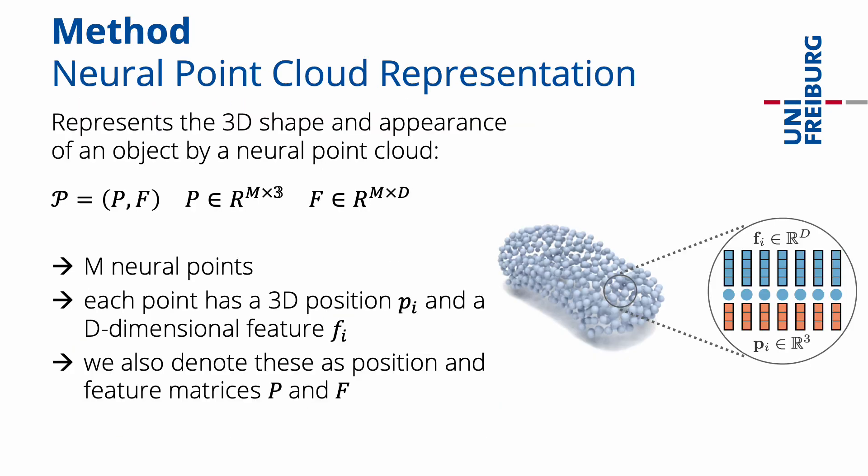To be more specific, the 3D shape and appearance of an object is represented by M neural points. Each neural point has a 3D position and a D-dimensional feature. We denote the positions and features of all points as matrices P and F.